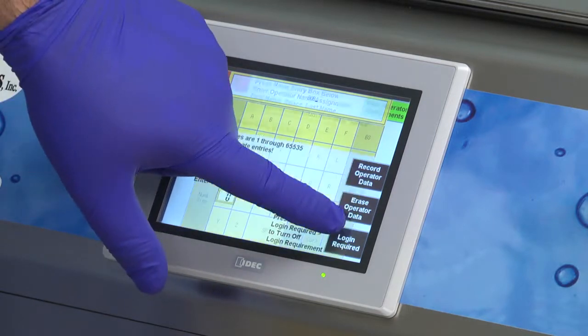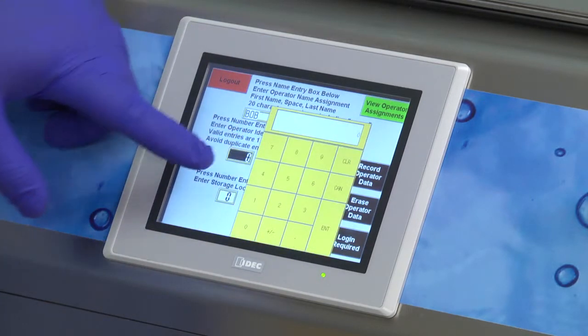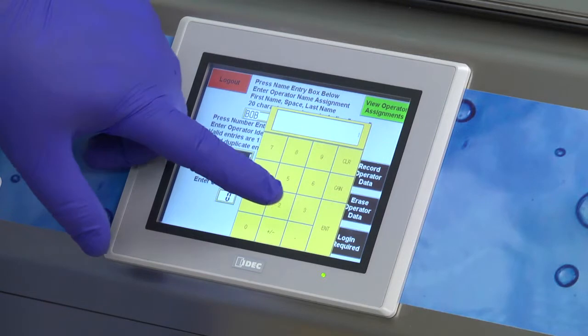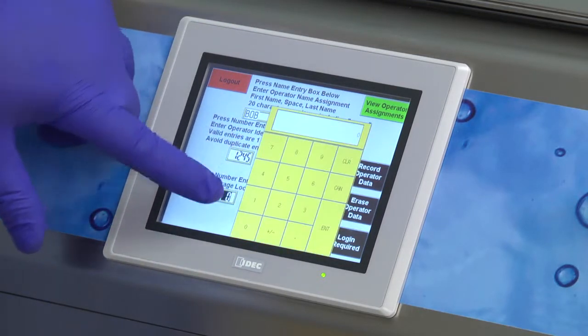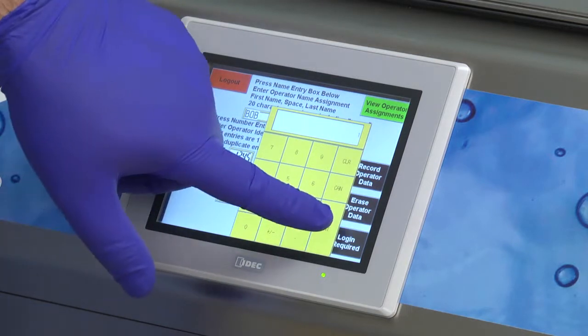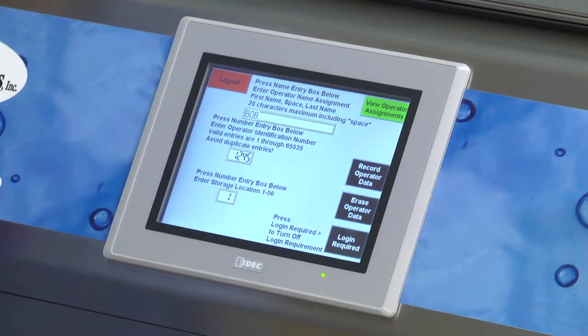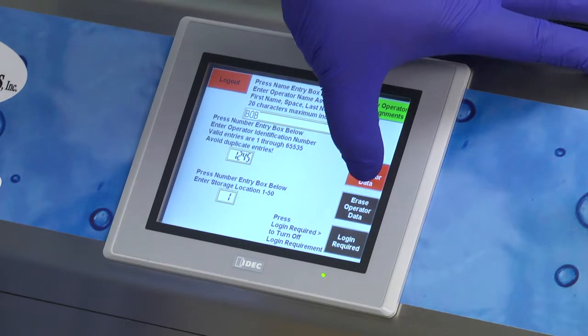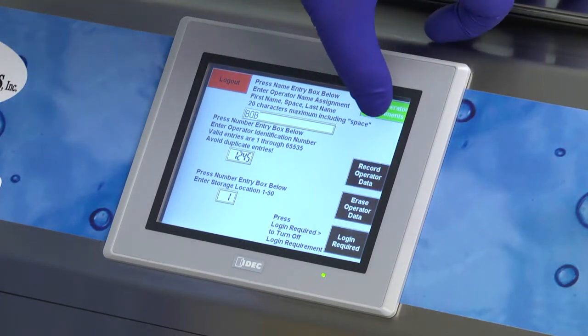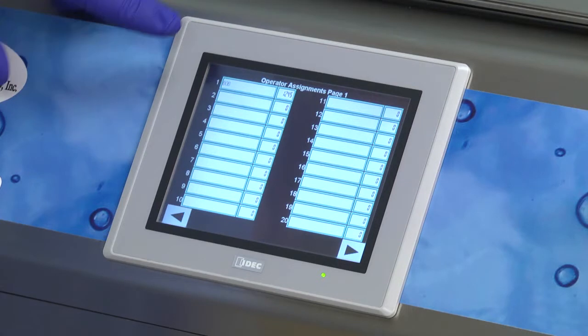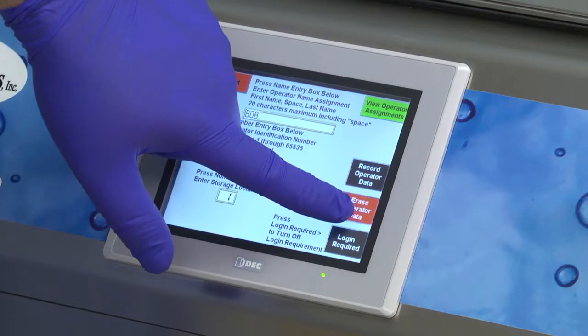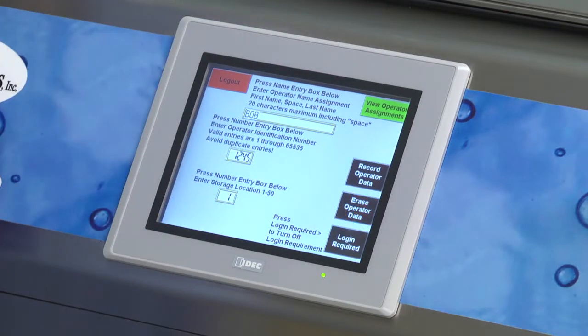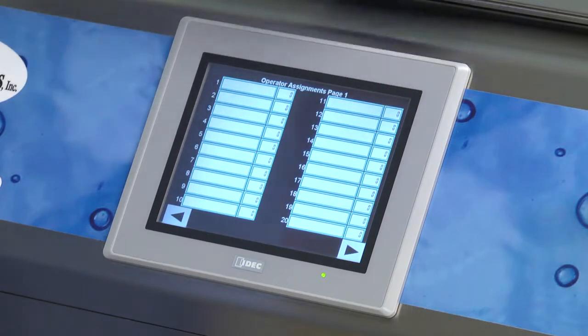To enter their identification number, press the Number Entry box and type their ID number, followed by pressing Enter. To assign their storage location number on the Operator Assignments log, press the Number Entry box and assign their number, followed by pressing Enter. Once all of the information is entered, select Record Operator Data to create the new operator login. To delete a login for a particular operator, enter in all of the operator's data, then press Erase Operator Data. This will remove the operator login from the assignment list and prevent operation by that user.